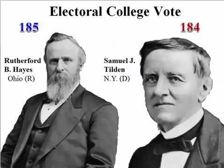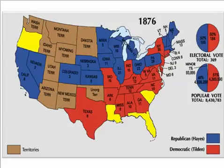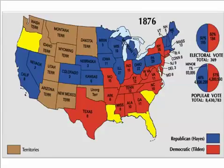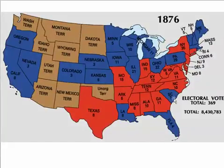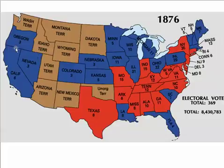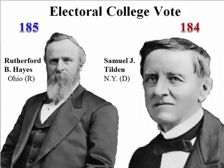The Democratic side and the Republican side both said the numbers were wrong, because four states' Electoral College votes were being contested. In those states, their Electoral College process was in question. Florida was one, Louisiana was another, South Carolina, and Oregon. Florida had 4 electoral votes, South Carolina had 7, Louisiana had 8, and Oregon had 3 — adding up to 22 electoral college votes being contested. Twenty-two votes out of 369 would definitely make a difference. What we have here is a conflict.